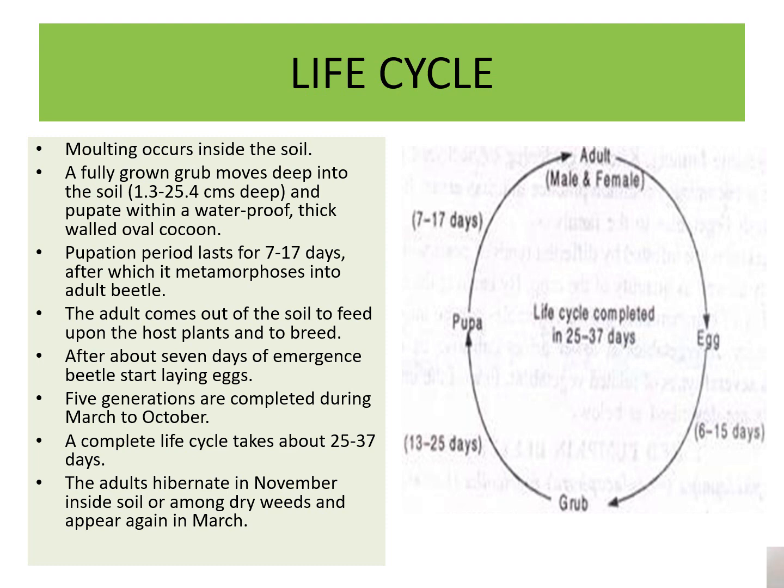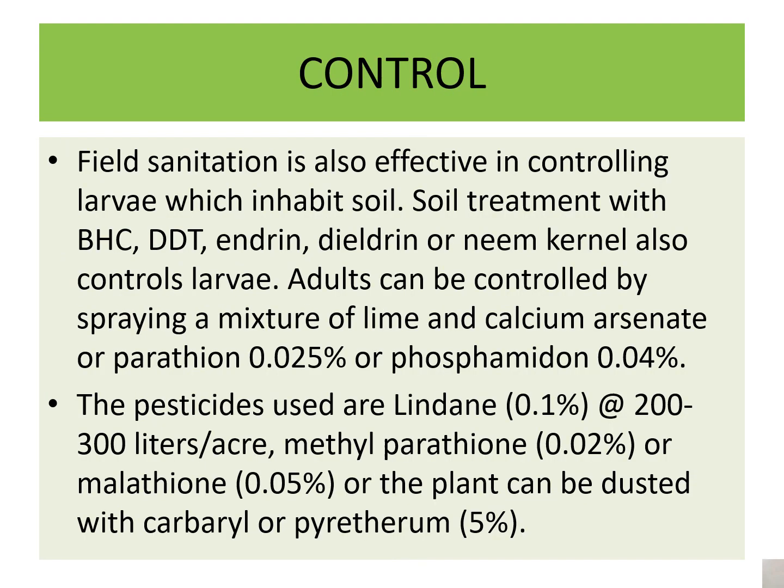To summarize the life cycle: the adults, male and female, will mate and lay eggs. The eggs mature into grubs. The grubs form pupae, and from the pupae the adults emerge again.